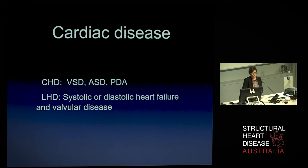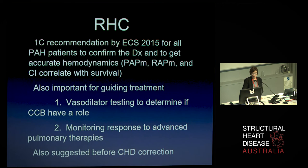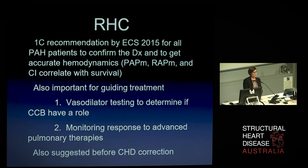Echo can show whether there are underlying cardiac diseases — congenital heart disease or left heart disease — making it a very useful starting point. However, right heart catheterisation is very important to confirm the diagnosis and obtain accurate haemodynamics that correlate with survival. Additionally, in a small subgroup of patients with idiopathic pulmonary hypertension, there may be marked vasoreactivity making them appropriate for calcium channel blockers — and if so, they have the potential for an almost normal five-year survival.